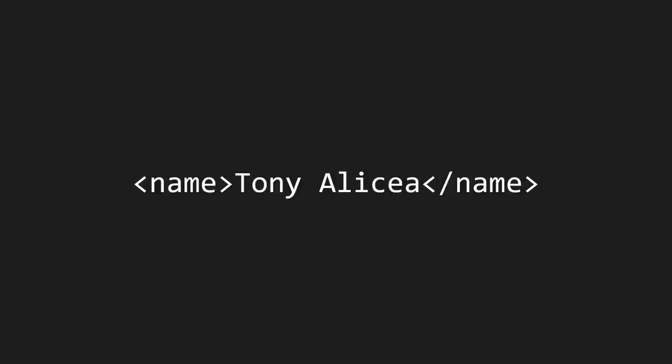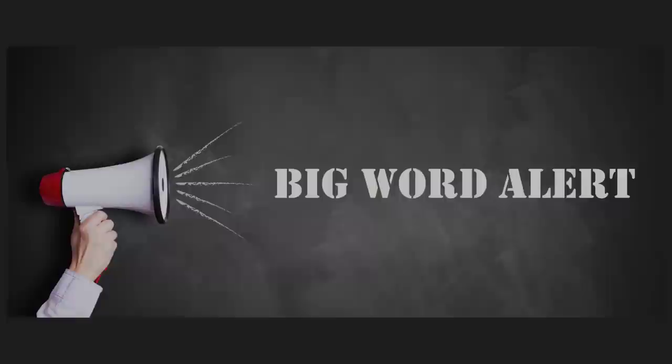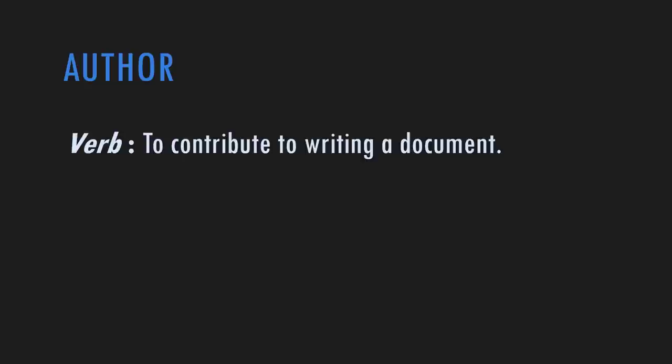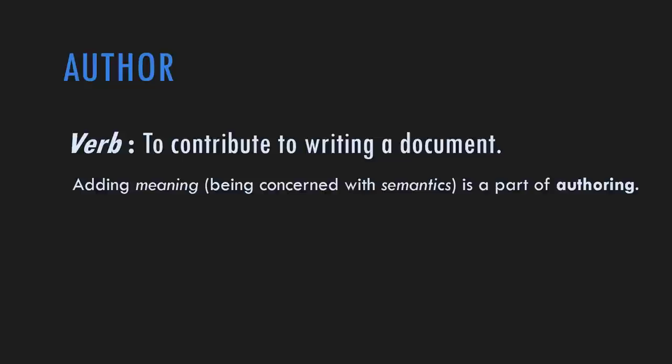When I add tags, I'm contributing to the authorship of the document. I'm authoring markup. Big Word Alert: author - in this case a verb, to author, to contribute to writing a document. When we author something, we're adding meaning, which means we're concerned with semantics. We're not just writing the contents, we're also making sure the contents are understood. So when we add tags to a document, we're authoring a document - we're contributing to it, extending it, and helping it to be communicated accurately. From now on, we'll refer to authoring HTML, and to you as an HTML author.